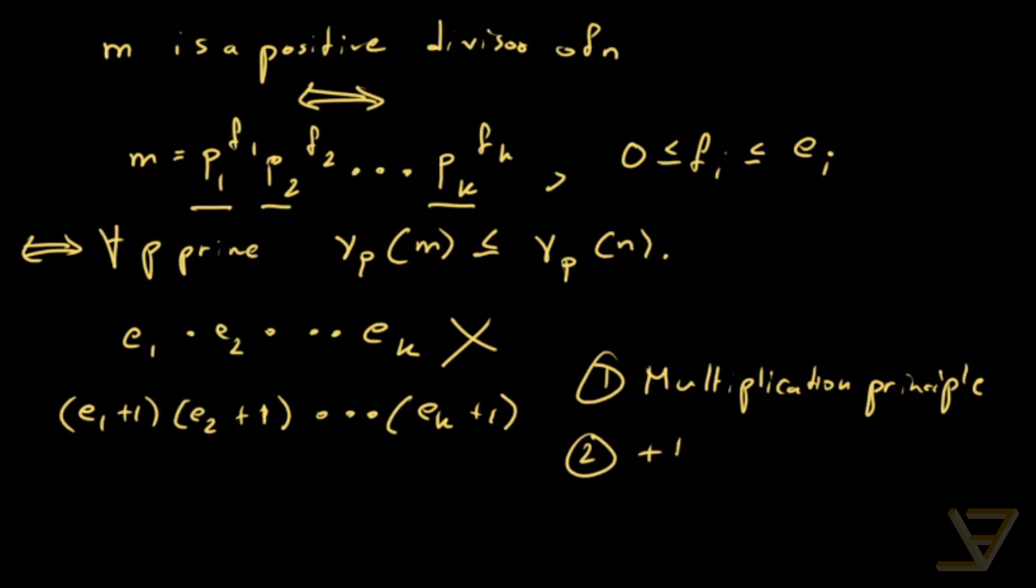And secondly, the plus 1 accounts for 0. So notice that in this range over here, there are e1 plus 1 possible fi. And so we've multiplied together all those e1 plus 1, which is the cardinality of the various components of the Cartesian product. That's the formal way of thinking about it.